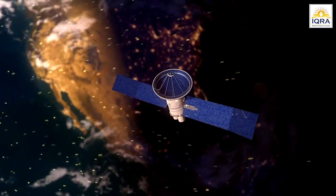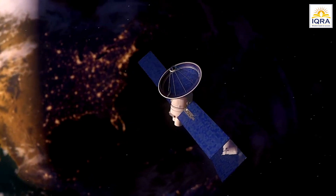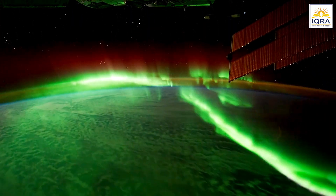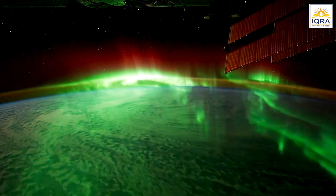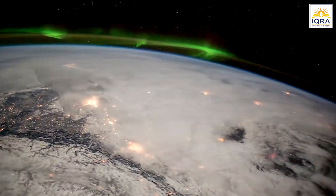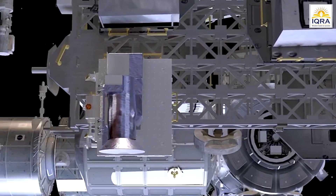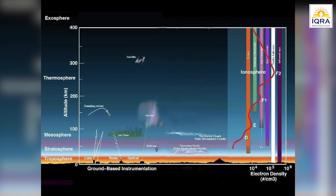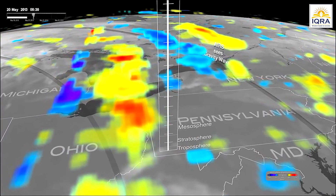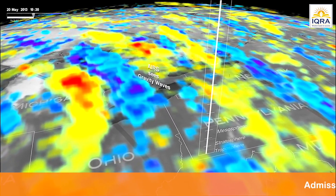NASA scientists have tracked gravity waves traveling thousands of miles across our atmosphere in concentric rings. Large storms can create these waves, which grow and spread upwards hundreds of miles above the Earth's surface. The Earth's instrument on NASA's Aqua satellite detected gravity waves in the troposphere and stratosphere 12 hours before a deadly EF-5 tornado in Moore, Oklahoma, in 2013.